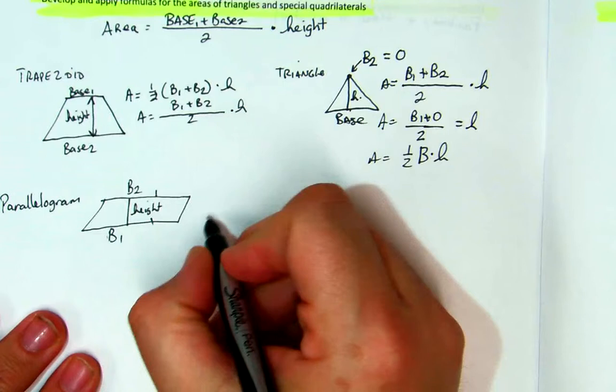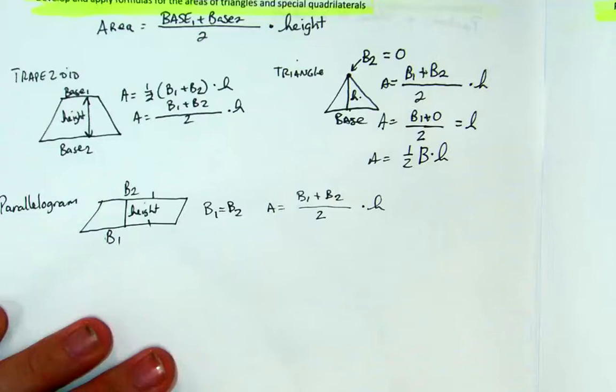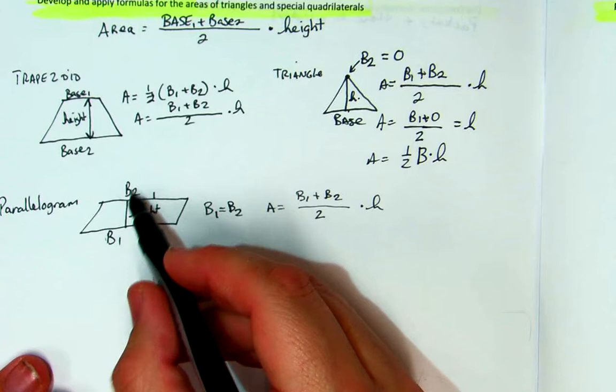So if I do my area formula, base 1 plus base 2 over 2 times the height, an example I would say is if you're bowling and you score 100 and then you score 100, what's your average? Your average is 100.